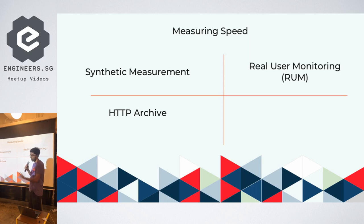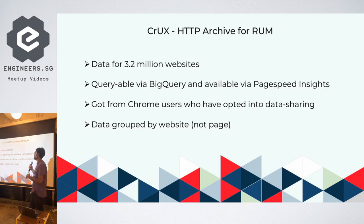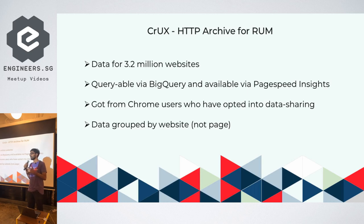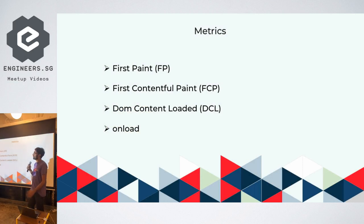That gap is now filled by a new dataset called CrUX, or Chrome User Experience Report — essentially HTTP Archive for real user monitoring data. It has data for more than 3.2 million websites, all available via BigQuery. The data comes from users who have opted into data sharing while browsing in Google Chrome; it's anonymized, captured across users, and grouped by website rather than individual pages.